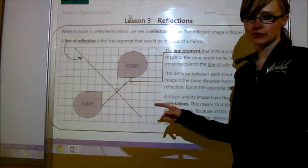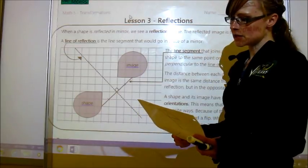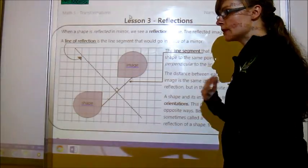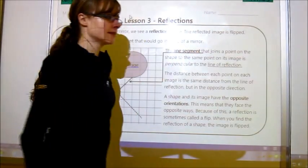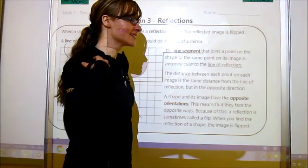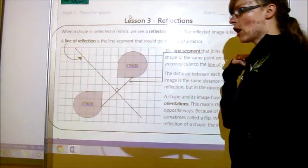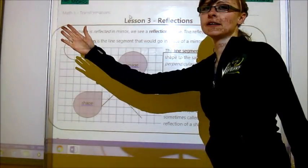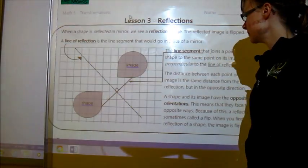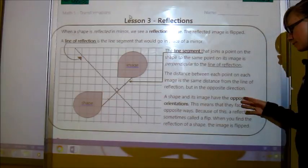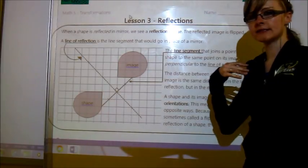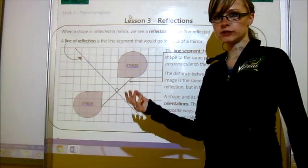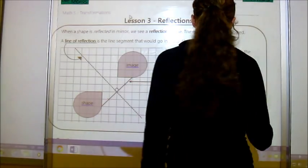And the last thing that you need to know is that a shape and its image have the opposite orientations. That's what it means when I say, this is mirror Miss Bashforth, and then this is real Miss Bashforth, I guess. So I'm opposite, right? This side of my face would be this side of the face of the reflected image. So because it has an opposite orientation, then sometimes we call a reflection a flip because the image is flipped.